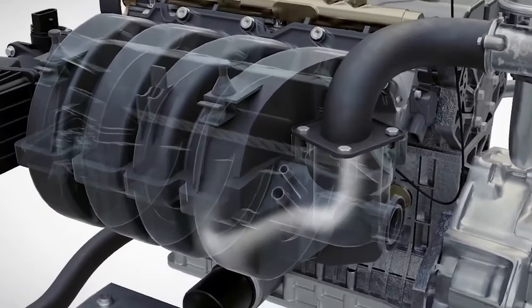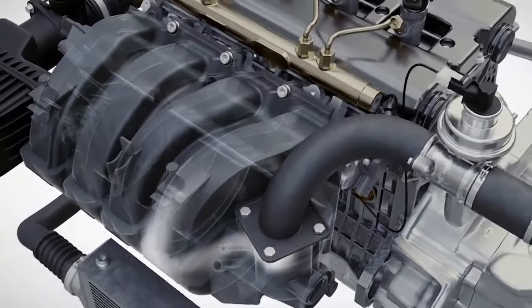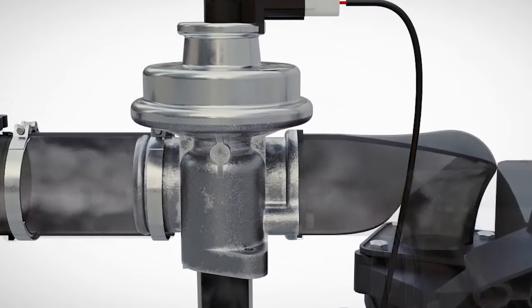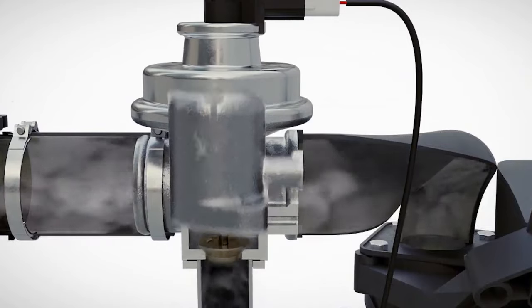Installed between the exhaust manifold and the catalytic converter is an exhaust gas recirculation valve. When this valve is activated, some of the spent exhaust gases are rerouted to the intake manifold, where they are combined with incoming air.